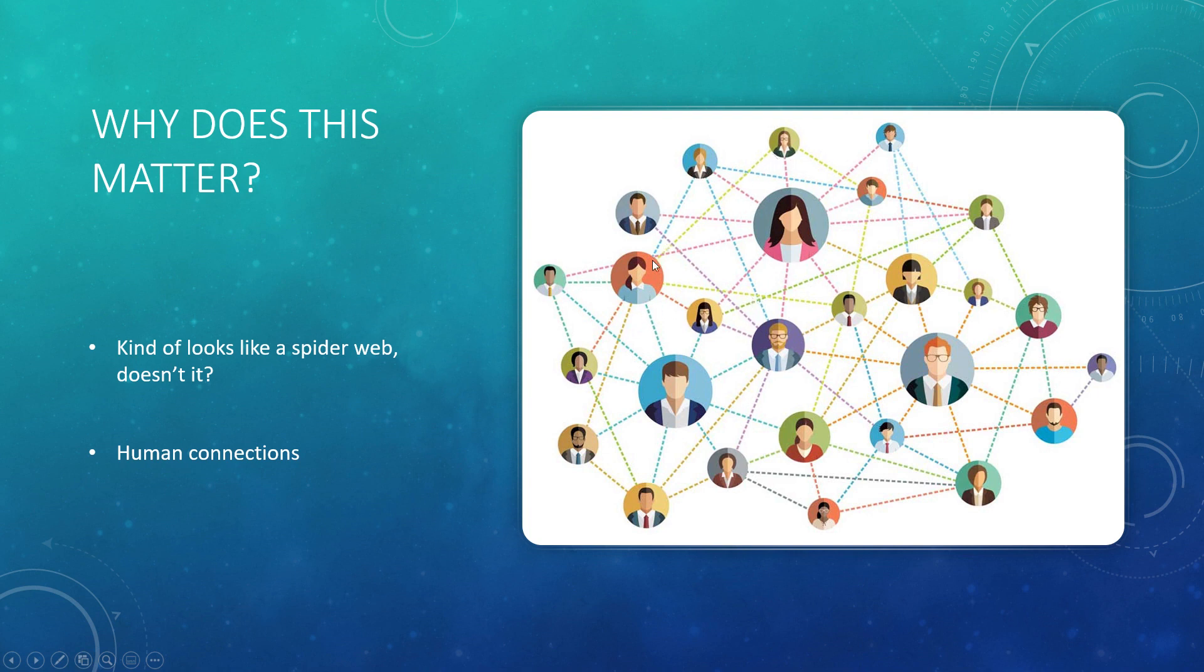If you notice, this person's connection does not directly connect to this person, but following the line, this person connects to this person which then connects back. Despite never knowing this person, this person still is connected to them. Why is that important?